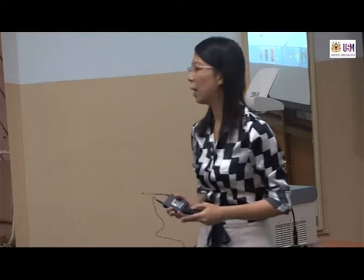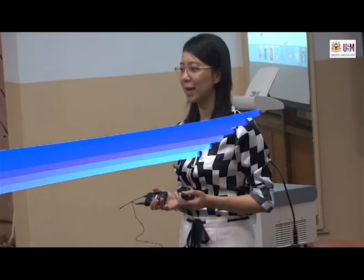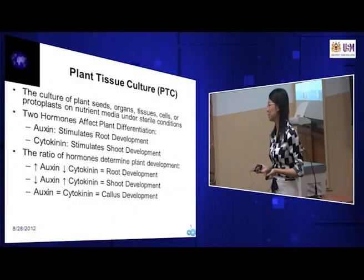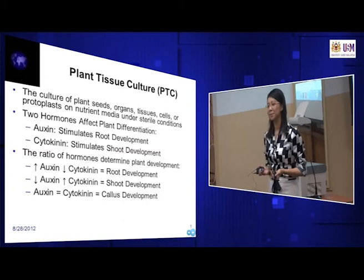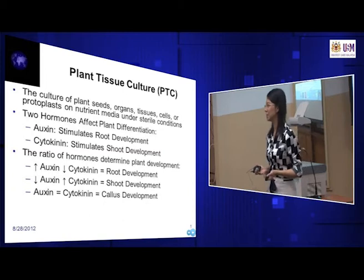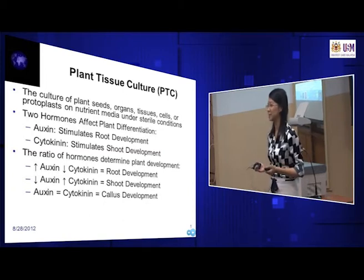For auxin, we want to induce root formation. For cytokinin, we want to induce shoot formation. Now if the concentration of auxin and cytokinin are the same, then callus will be produced. Callus are, in our terms, maybe like stem cells — undifferentiated cells.